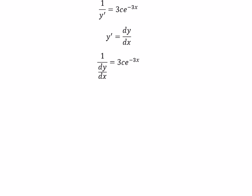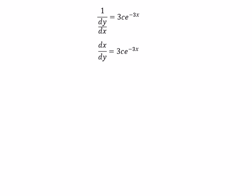So we get dx over dy. We put e to the power of negative 3x dx on the left, dy on the right.